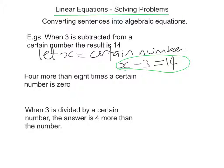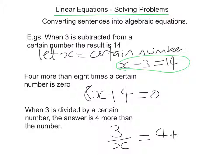Let's look at the next one. 4 more than 8 times a certain number is 0. So I'm going to choose x again to be my certain number. So 4 more than 8 times it: 8 times the certain number and 4 more equals 0. In the last one, when 3 is divided by a certain number, so 3 divided by a certain number which we call x, the answer, which means equals, is 4 more than the number, 4 plus x.